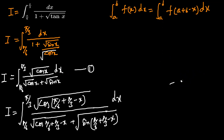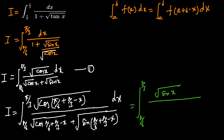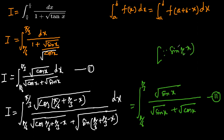Then cos(π/2 − x) becomes sin x. So this equals integration from π/6 to π/3 of √sin x divided by (√sin x plus √cos x) dx. This is also equal to I, so let's call this equation 2. We used the identities: sin(π/2 − x) = cos x and cos(π/2 − x) = sin x.